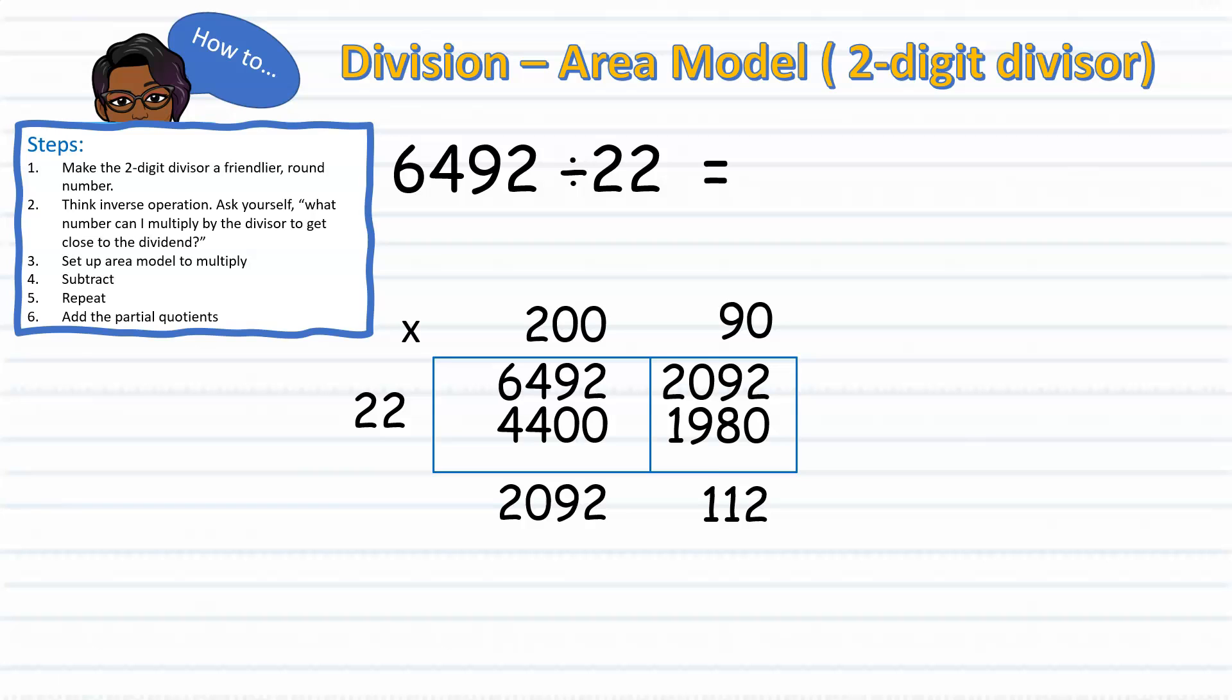Being that 112 is larger than our divisor, we must continue to divide by extending our area model. Once again, we'll ask ourselves, what number times 22 will get us close to 112? With a little mental math computation, students should be able to recognize that 22 times 4 equals 88, and try to get even closer to the dividend of 112 by multiplying 22 times 5, giving us 110, which is very close to our dividend of 112. So we'll go ahead and set that up. Now I can continue with subtraction, 110 from 112, leaving me with a difference of 2. 2 being smaller than my divisor, I know I am done dividing. So 2 will serve as my remainder.